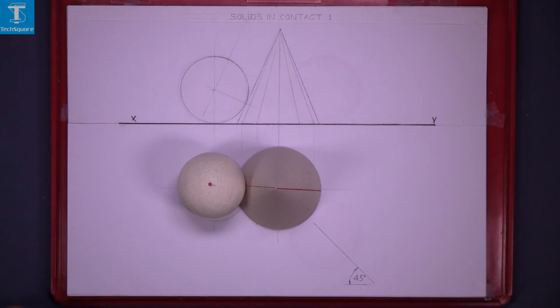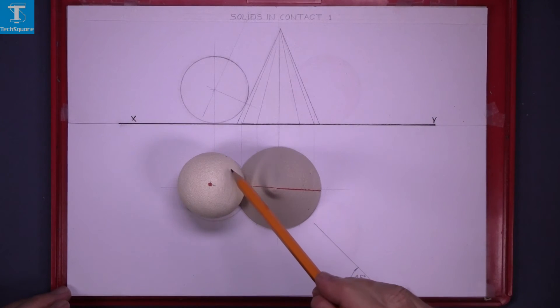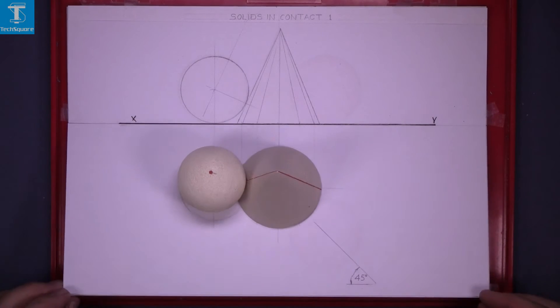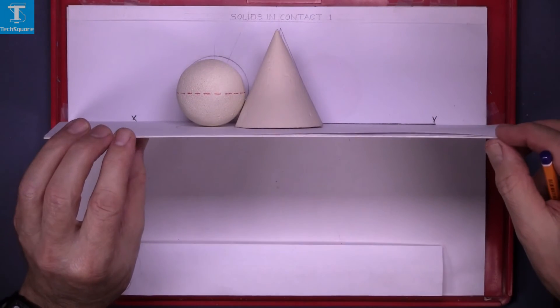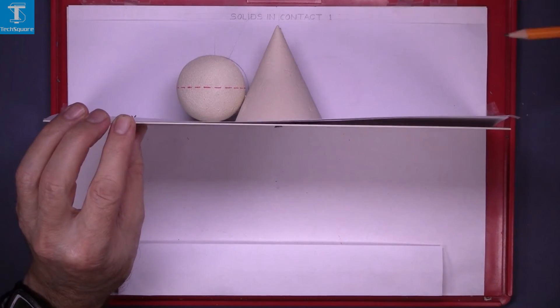Now that's the two solids in position again. As you can see, the sphere extends over the base of the cone. The base of the cone continues around underneath the sphere. The sphere extends over the base of the cone, and in the elevation we can see the point of contact between the two.